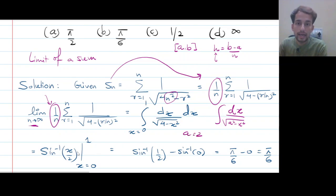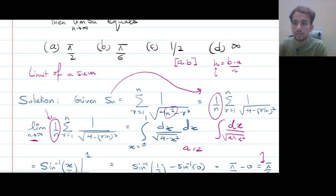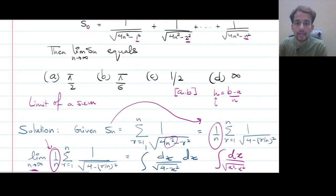So, sine inverse of x/2 for range of x from 0 to 1, and this will come out to be π/6. So your original sequence Sn converges to π/6.